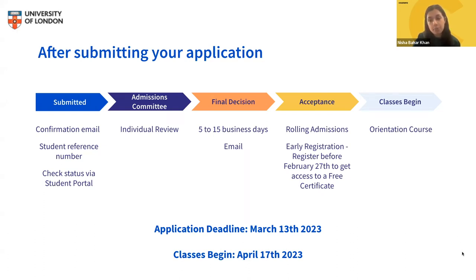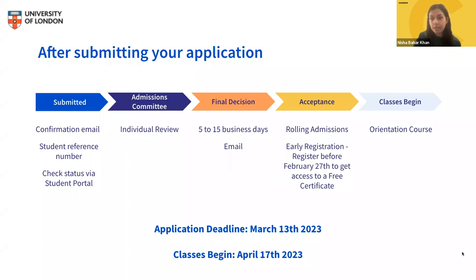Once you've paid for your modules, about a month before the programme begins, you'll receive an email to link your Coursera account. You'll then need to complete the orientation course, which covers how to navigate Coursera, programme policies, and communication channels to connect with your peers. You must pass all orientation quizzes with at least 80% to access your modules. The session begins April 17th, 2023. If you don't receive module access when the session starts, contact bsccs.support@london.ac.uk.